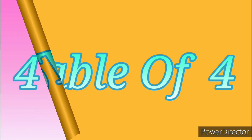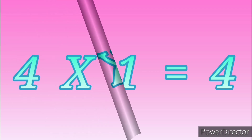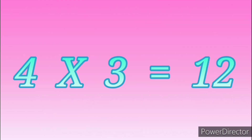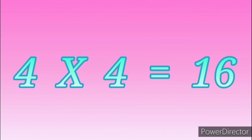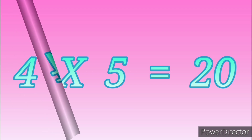Table of Four. Four ones are four. Four twos are eight. Four threes are twelve. Four fours are sixteen. Four fives are twenty. Four sixes are twenty-four.